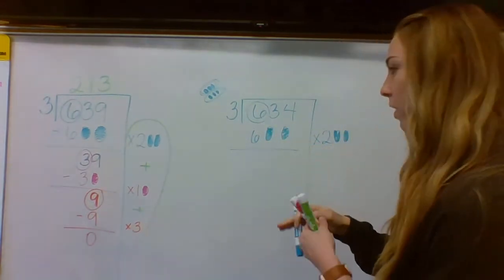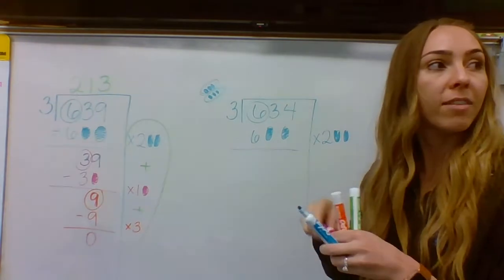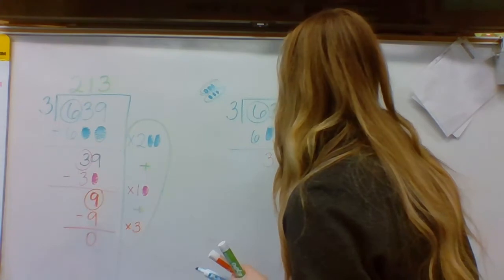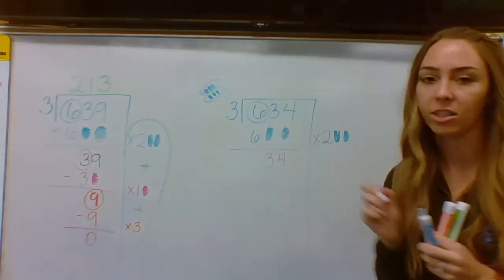It should be sounding familiar. So far it's the same. After I subtract 600, I'm left with 39. Or sorry, 34. I forgot I changed it.